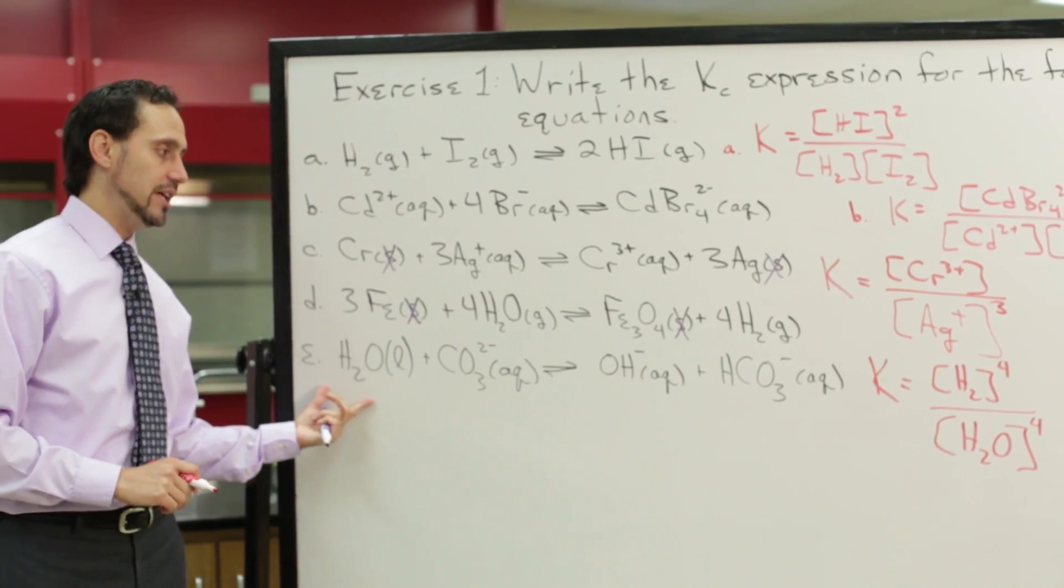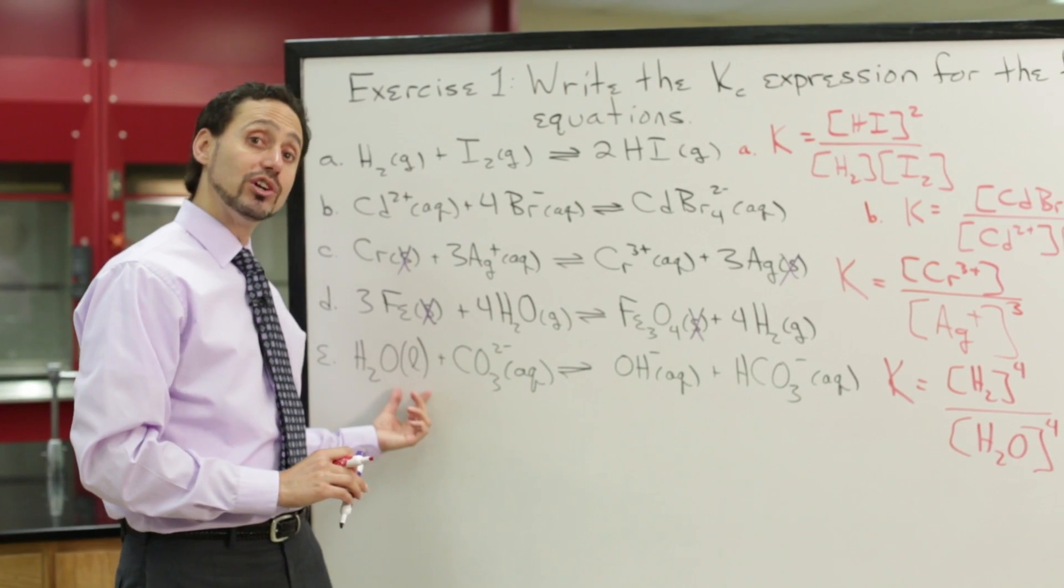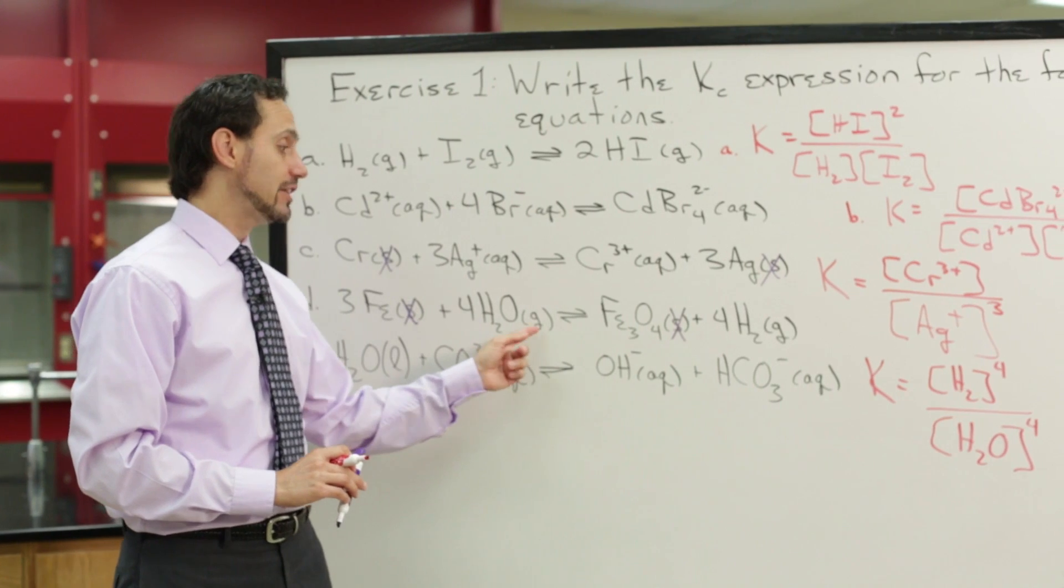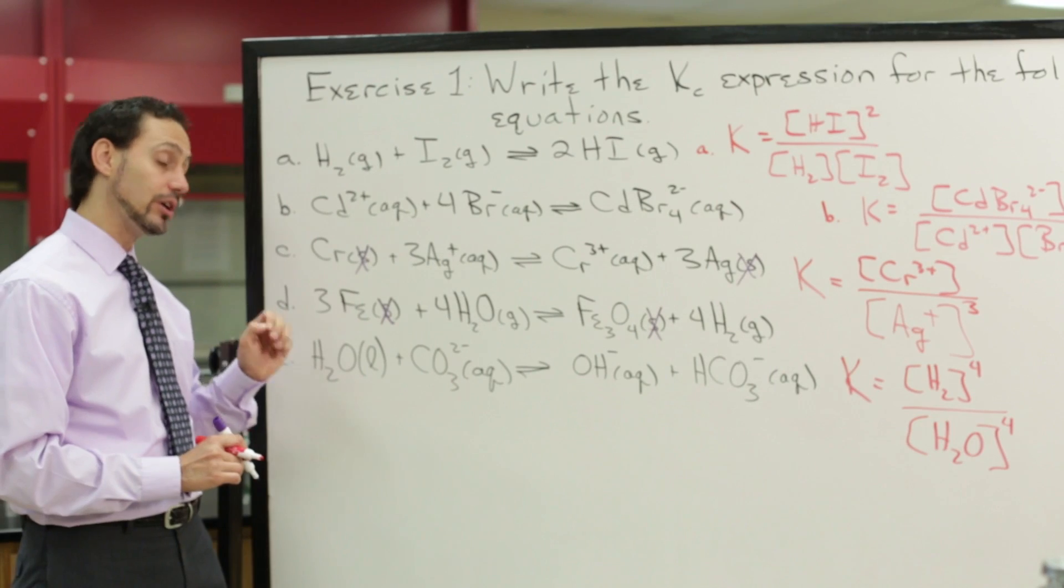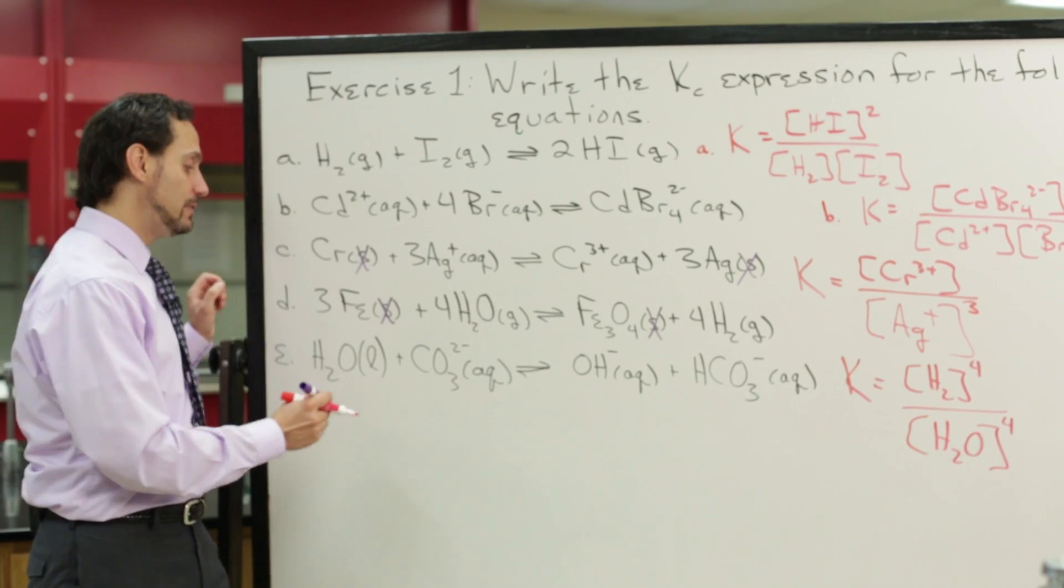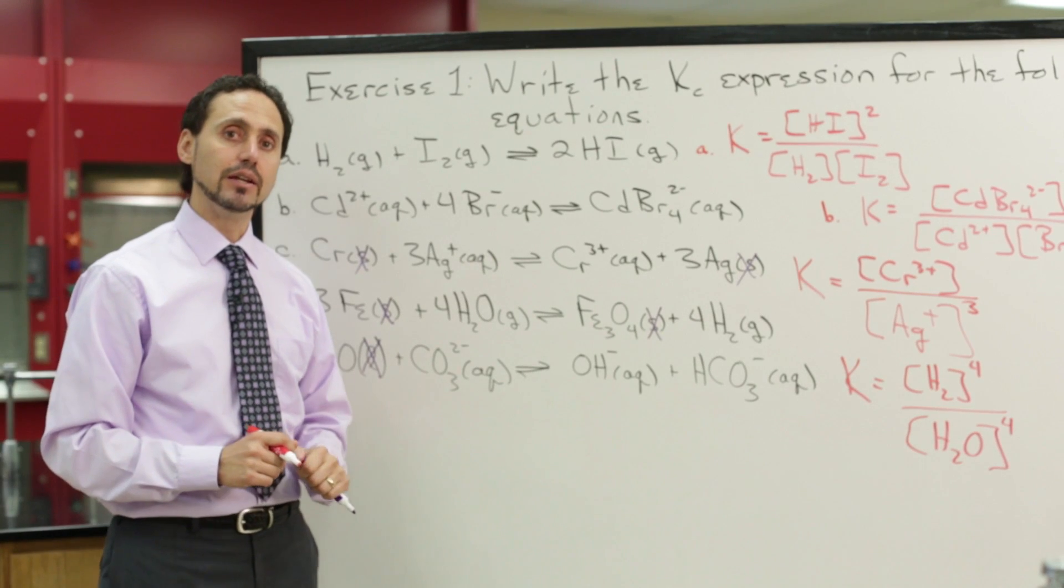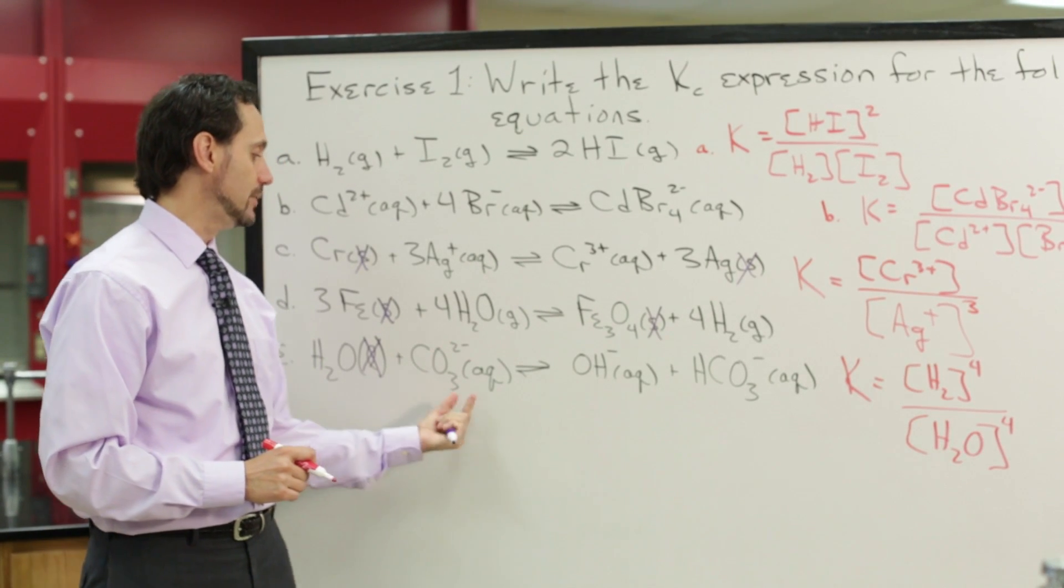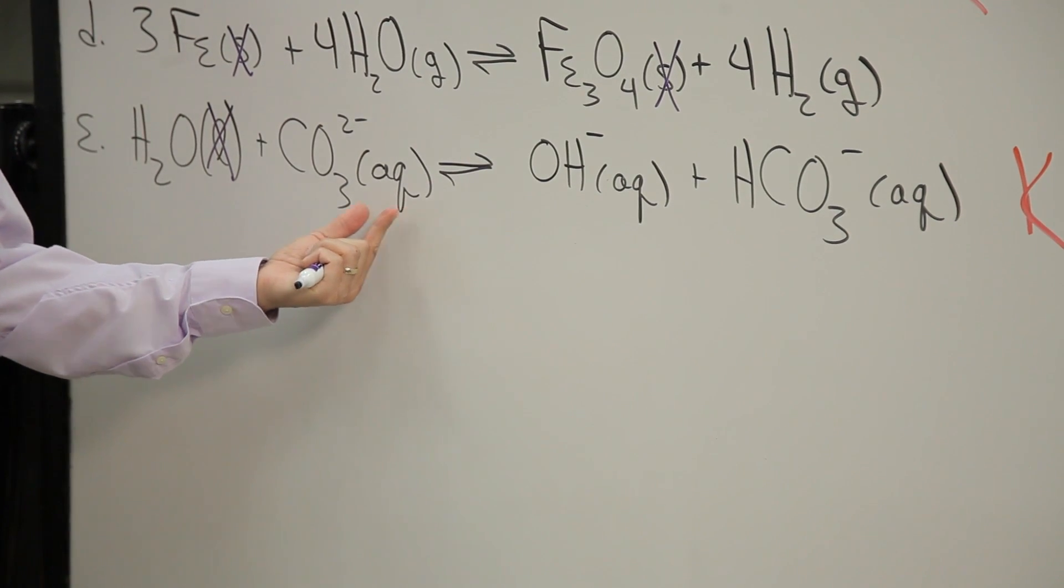Let's look at equation E here. We have water, but water is in the liquid phase, not the gas phase like it was over here. So again, this is where it pays, it's important to pay attention to the physical state. Liquids are never included in the equilibrium constant expression. The carbonate ion, aqueous, that'll be okay to include. Hydroxide ions, aqueous phase, we'll include that. And the bicarbonate ion, also aqueous, so we'll include that.